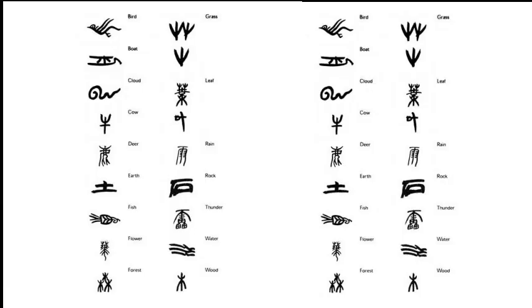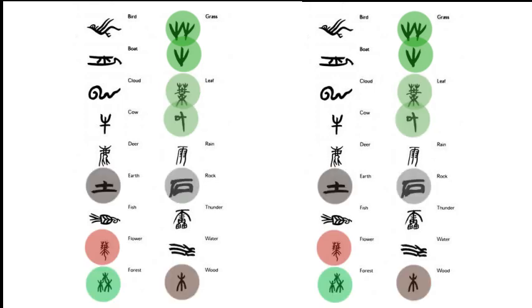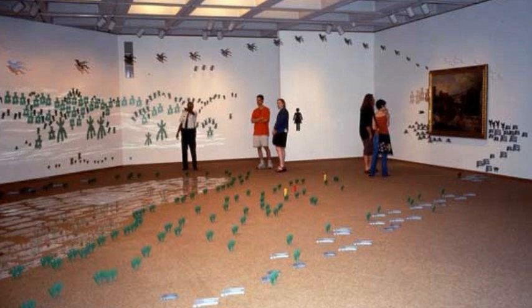There are symbols to represent nature, such as grass, flower, leaf, wood, forest, stone, earth, and water. These symbols all have different colors, and each instance of the same symbol does not have the exact same color either.